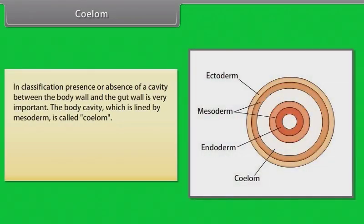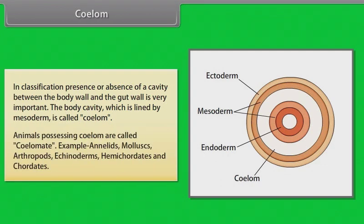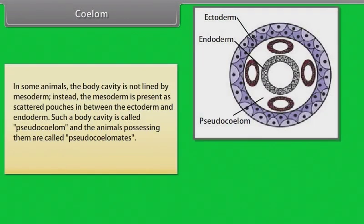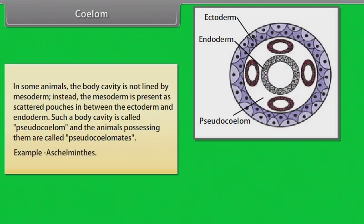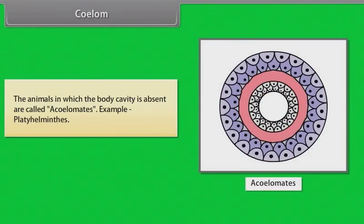Coelom: In classification, the presence or absence of a cavity between the body wall and the gut wall is very important. The body cavity lined by mesoderm is called coelom. Animals possessing coelom are called coelomates. In some animals, the body cavity is not lined by mesoderm; instead mesoderm is present as scattered pouches between ectoderm and endoderm — such a cavity is called pseudocoelom, and these animals are pseudocoelomates. Example: Aschelminthes. Animals lacking a body cavity are called acoelomates. Example: Platyhelminthes.